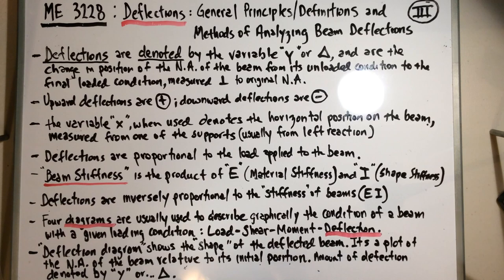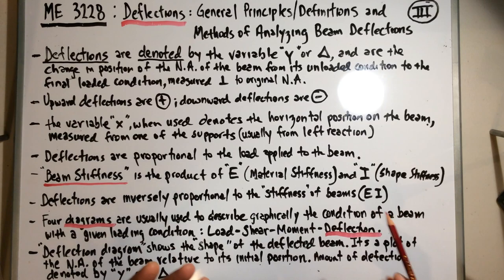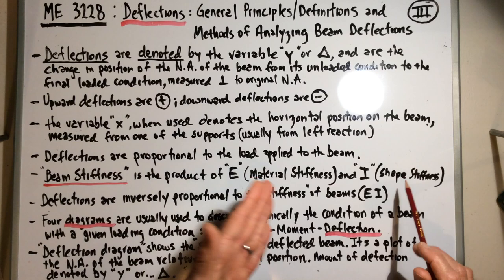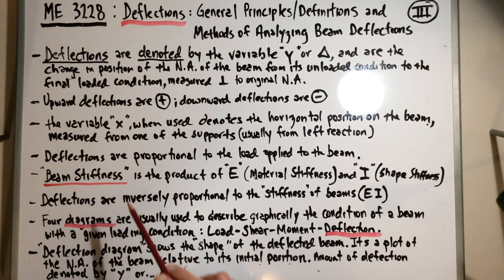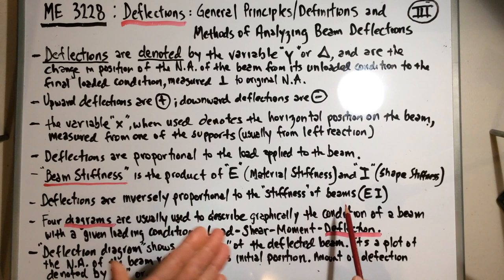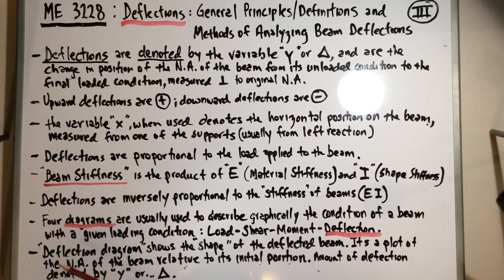There are two ways to denote stiffness: E, the modulus of elasticity, is the material stiffness; and I, the moment of inertia, is the shape stiffness — a geometry relationship related to the cross-section. The product EI is the overall beam stiffness. Because deflection is inversely proportional to beam stiffness, you will always see EI in the denominator of all deflection equations.